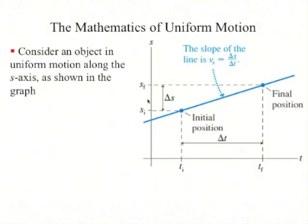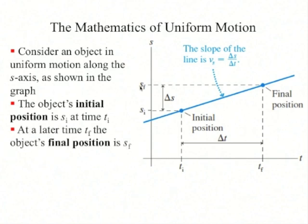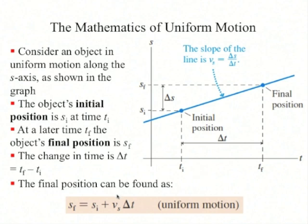The equation for uniform motion can be found by considering an object in uniform motion along the s-axis. Here s is a generic symbol which could stand for x or y, whether you're dealing with horizontal, vertical, or diagonal motion. The object's initial position at time t_i is s_i, and at a later time t_f it's at final position s_f. The final position can be found as the initial position plus the velocity times delta t.